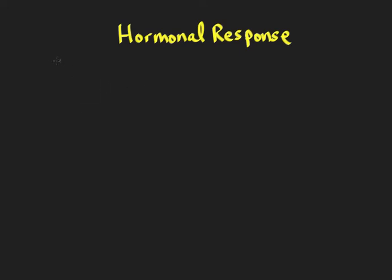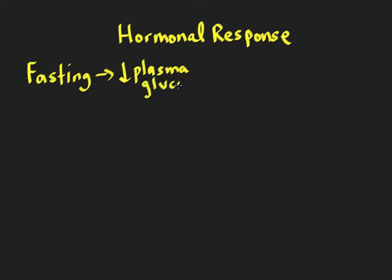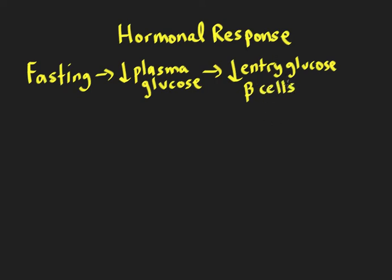When you're fasting, you're not eating, so your blood sugar starts to go down — your plasma glucose goes down. If there's less plasma glucose, there is decreased entry of glucose into the pancreatic beta cells. The beta cells have the ability to sense glucose because when glucose normally goes in, it's metabolized by glucokinase and the other glycolytic enzymes and you produce ATP. So if you have less glucose entering the beta cell, you're going to have less ATP produced via glycolysis.